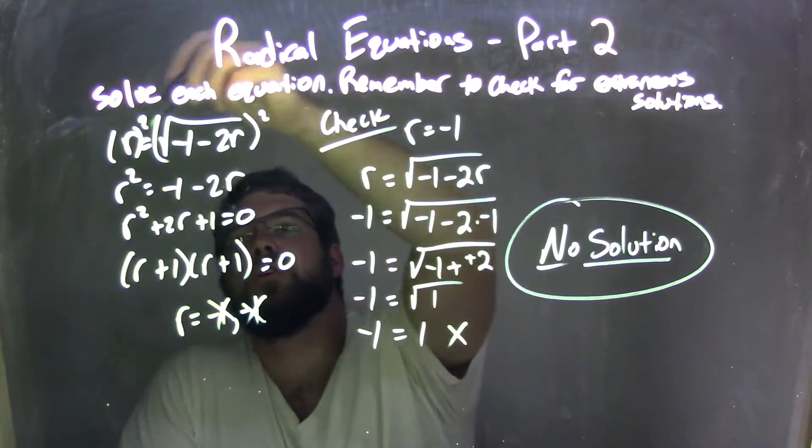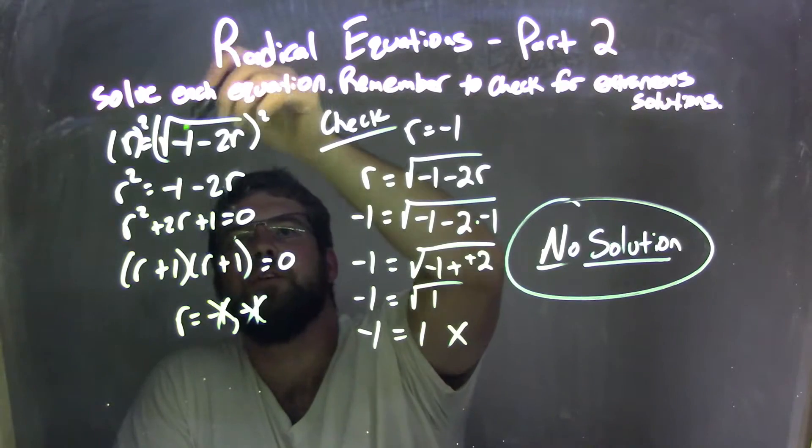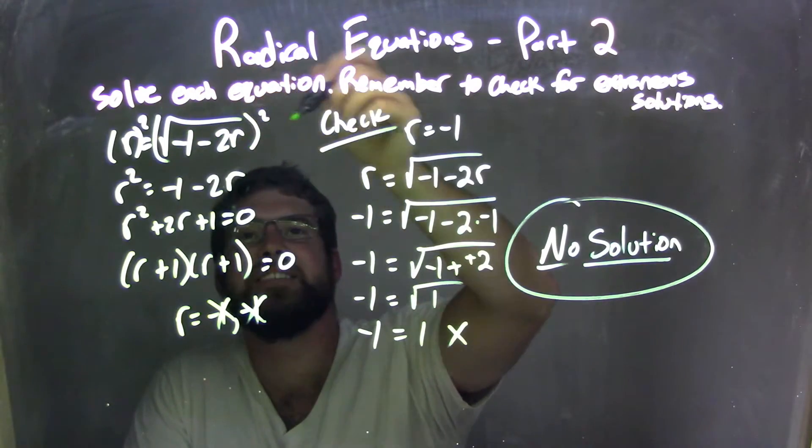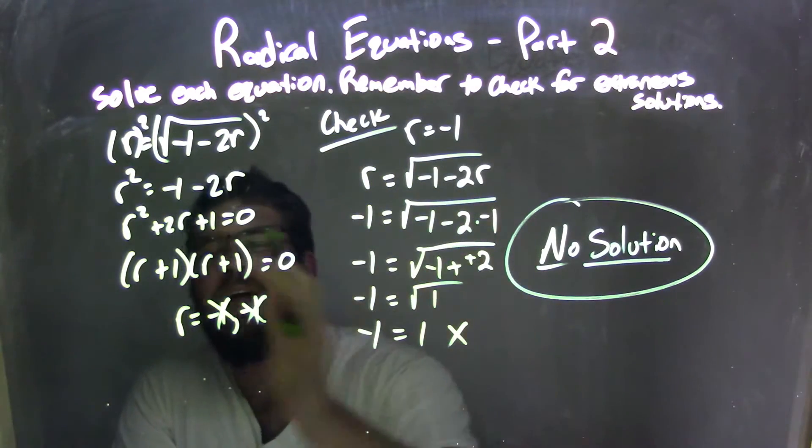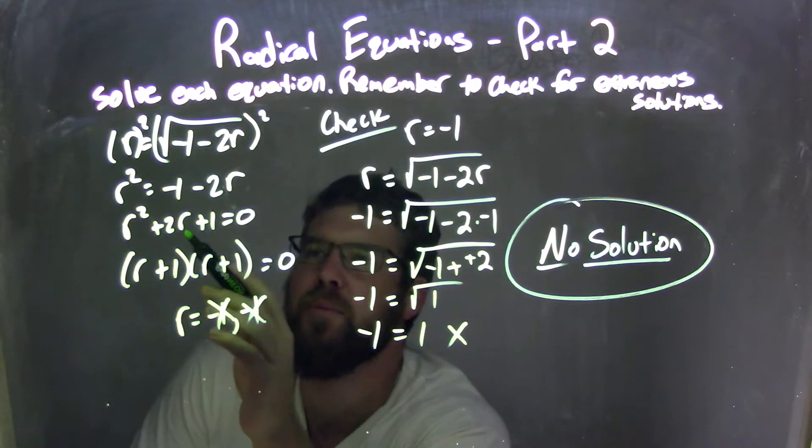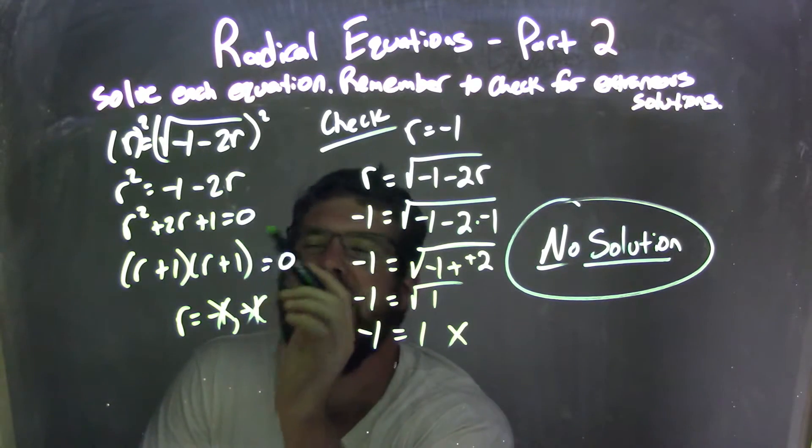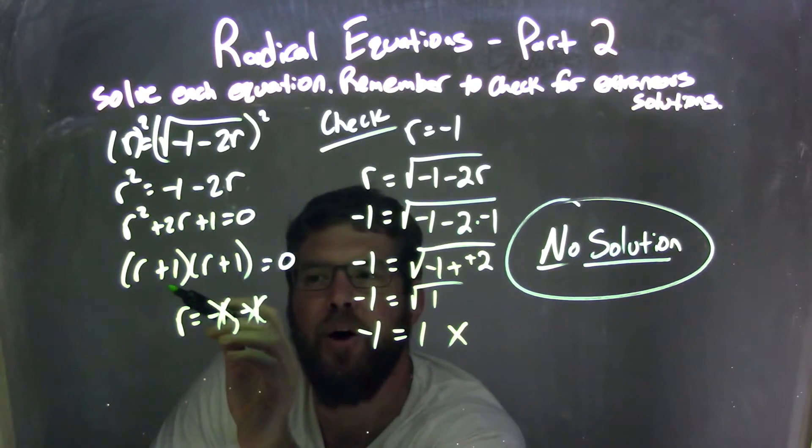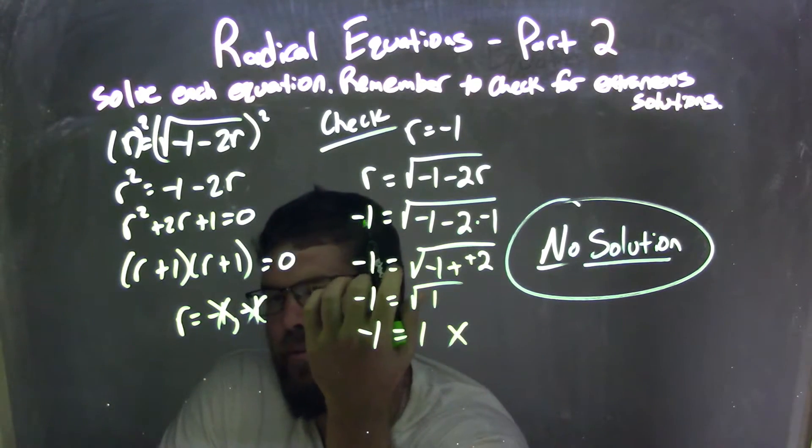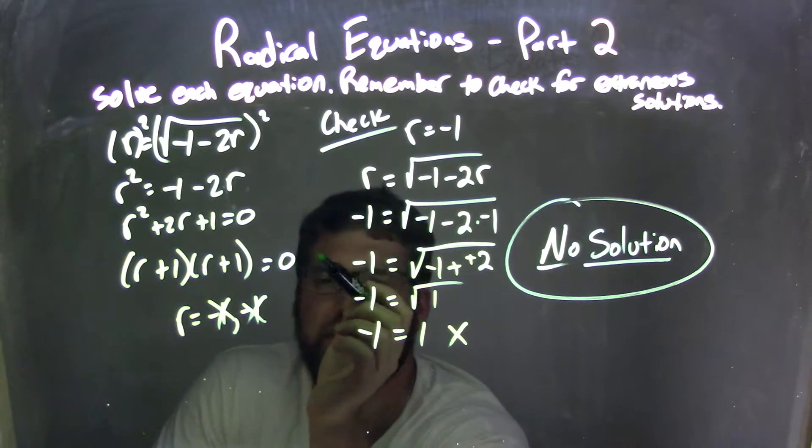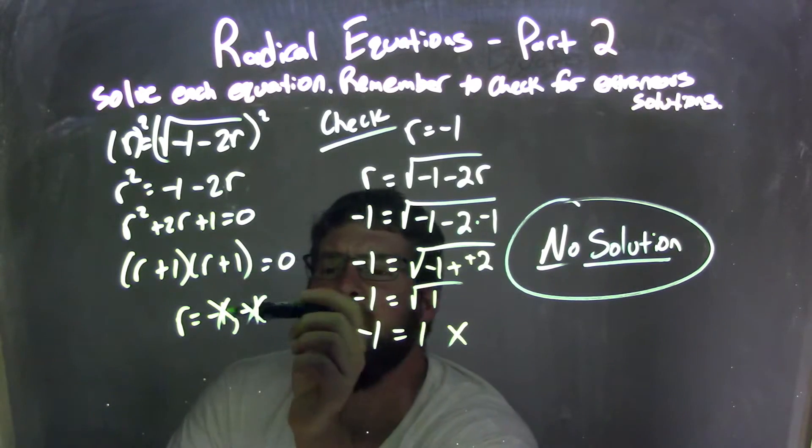So let's recap. We took our equation, r equals square root of negative 1 minus 2r. I squared both sides along the square root. Brought everything over to the left. Left with r squared plus 2r plus 1 equals 0. I then factored that. If I could factor it, I got r plus 1, r plus 1, which is r plus 1 squared, equals 0.